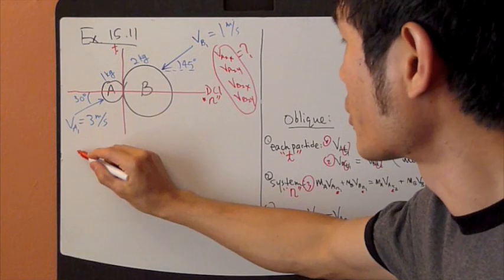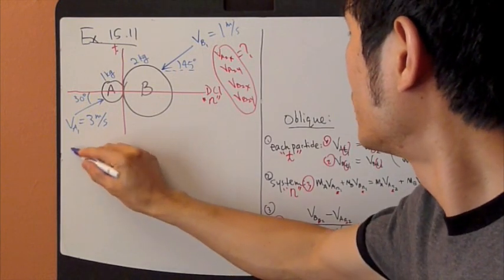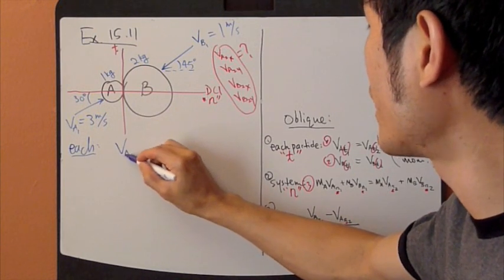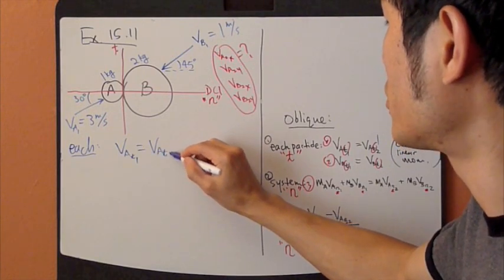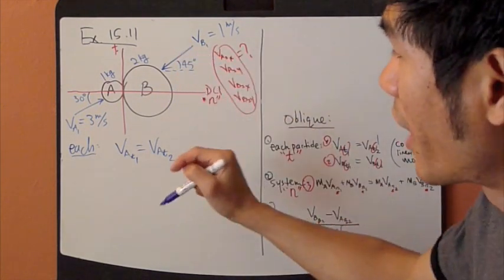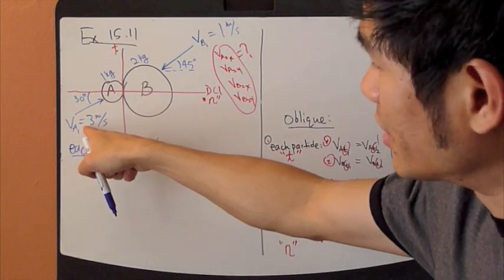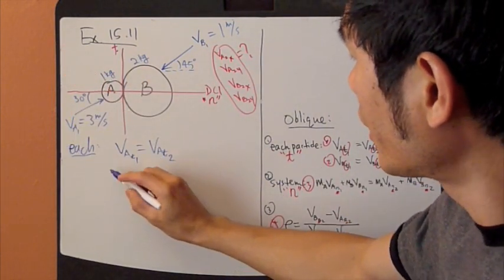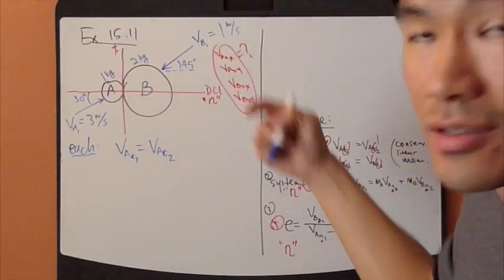Let's look at each particle. So equation one. For each particle, let's start with particle A. So velocity of A in the tangent direction before equals velocity of A tangent direction after. So just apply this to this picture right here. So VA tangent before, and that's given. So you need to decompose this into the tangent direction. By the way, this X and Y, X simply is normal, Y is tangent.